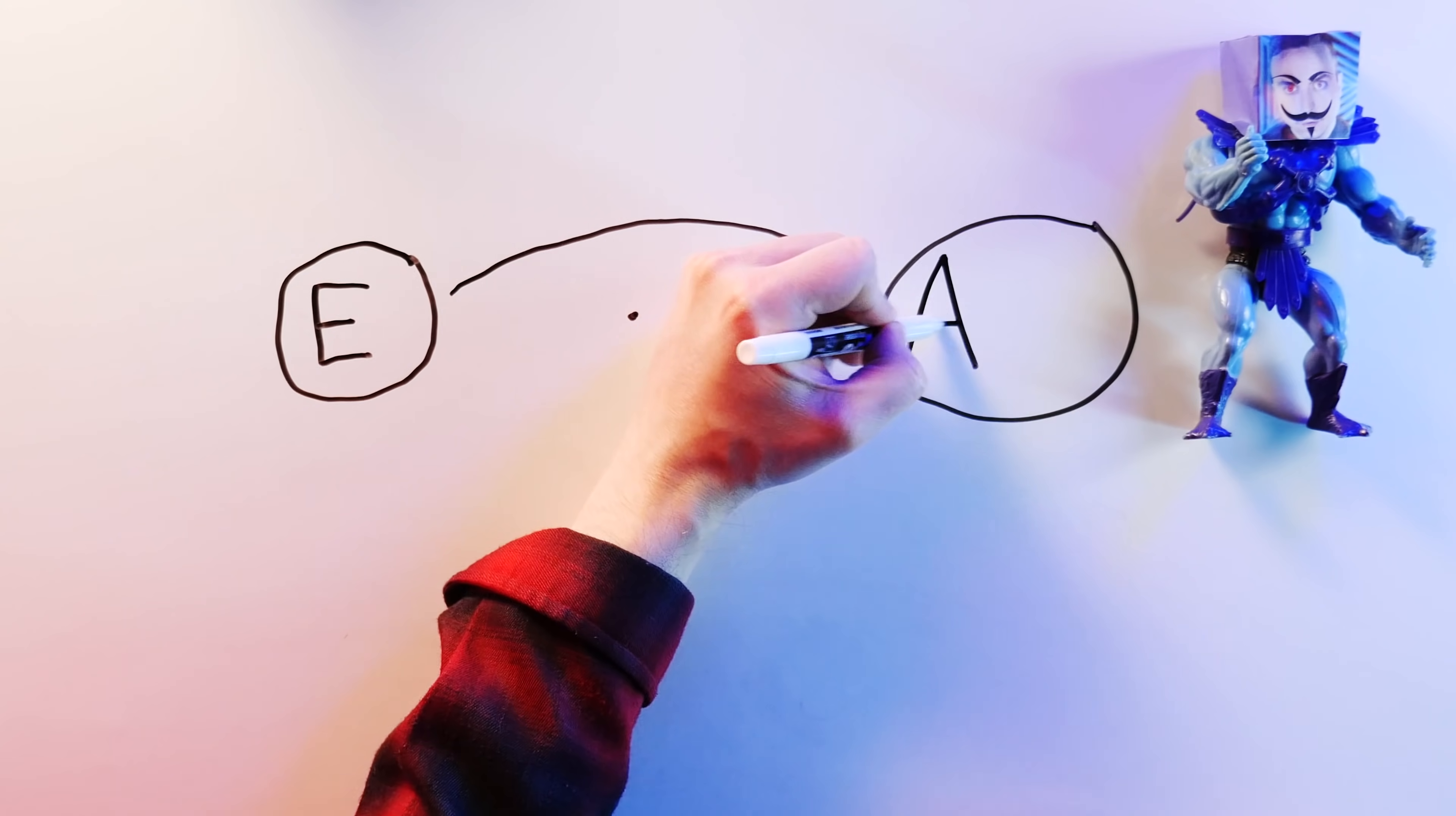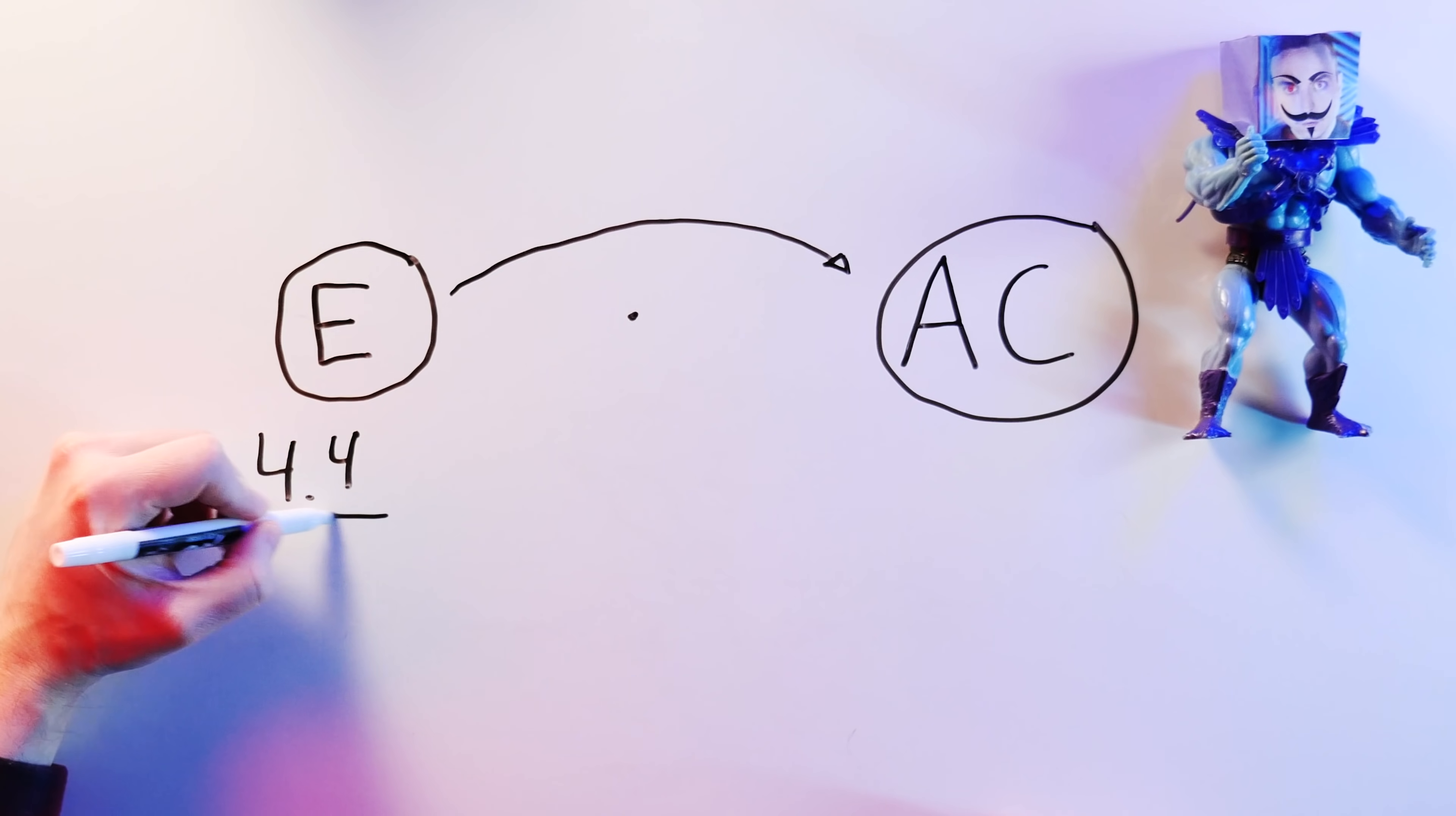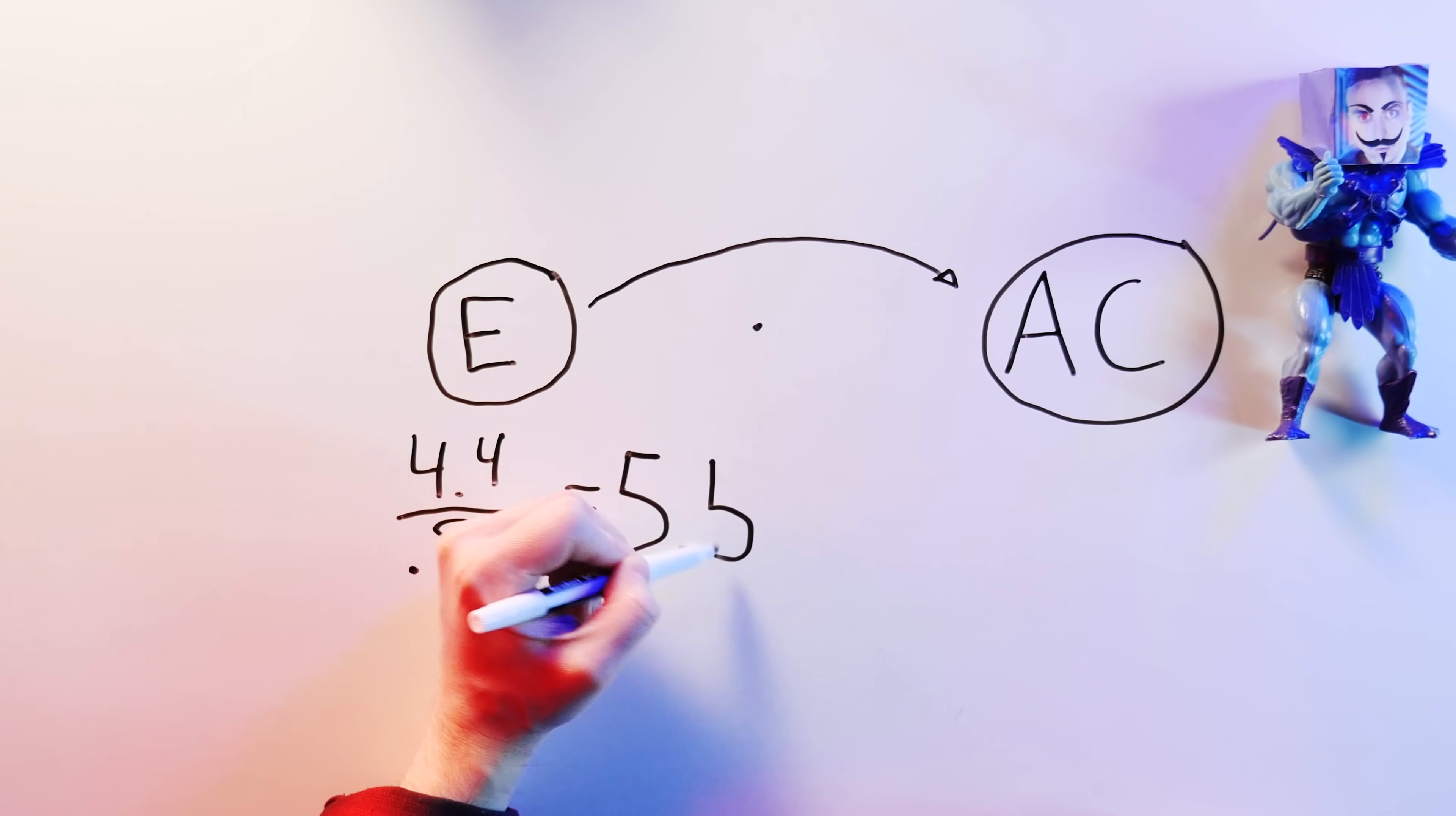Bevan. Alpha Centauri is about 4.4 light years away. If I put Bevan on a ship called V-Space-2 and sent him off at, say, 0.8c, that's 80% of the speed of light, he'll get to Alpha Centauri in 5.5 years.